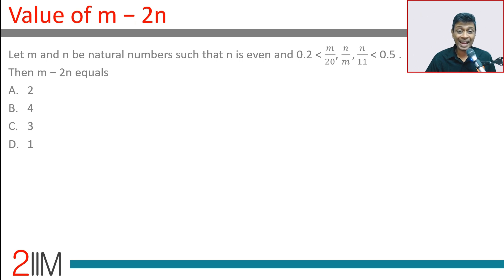Let m and n be natural numbers such that n is even and 0.2 < m/20, m/n, and n/11 < 0.5. Beautiful question. I missed this when I got multiple answers.